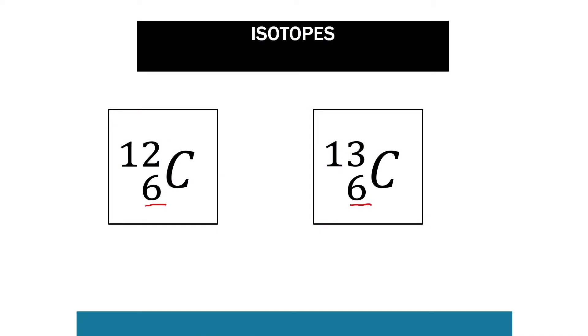So all carbon will have six protons, and all sodiums will have 11 protons. What changes is the mass number — here our mass number is 12, whereas for carbon-13 it's 13. The difference between these two is the number of neutrons: in carbon-12 we'll have six neutrons, but in carbon-13 we'll have seven.